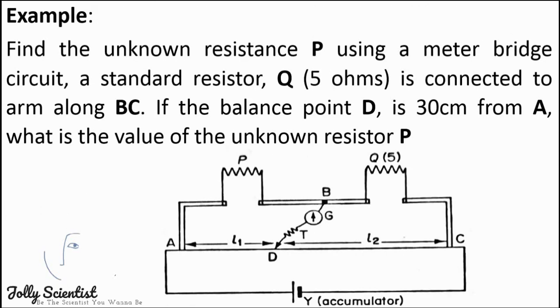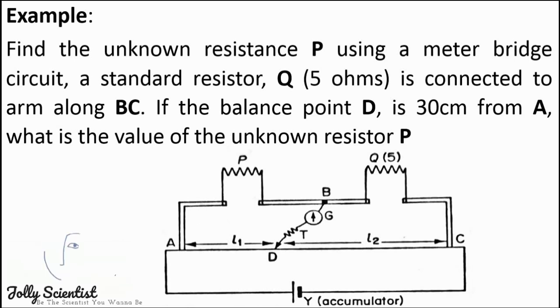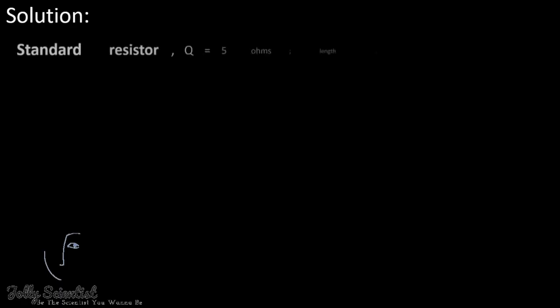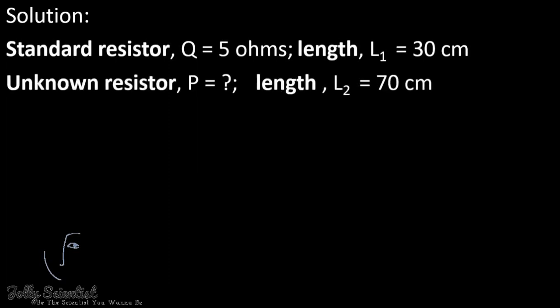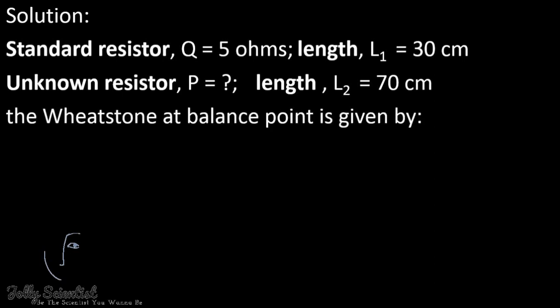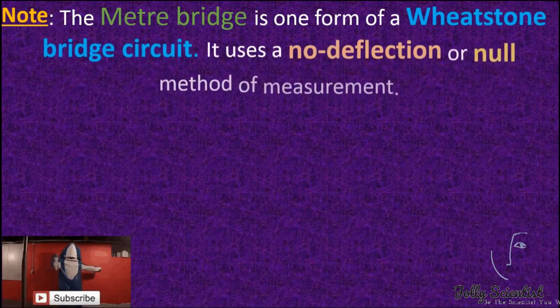Problem: Find the unknown resistance P using a meter bridge. The standard resistor Q is 5Ω connected along arm BC. If the balance point D is 30 cm from A, what is P? Since the balance point for Q is at 30 cm, the length for P is 70 cm. Using P divided by Q equals L1 divided by L2: P equals 5 times 30 divided by 70, which gives 2.14Ω.